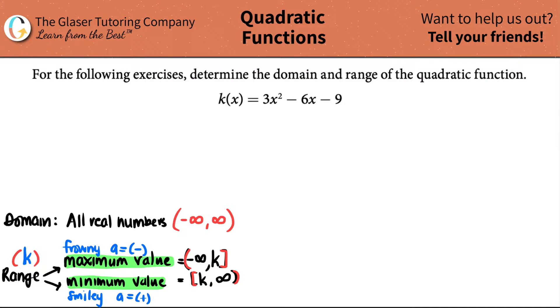For the following exercises, determine the domain and the range of the quadratic function. They give us one quadratic function here: k of x equals 3x squared minus 6x minus 9. We just have to find the domain and range.